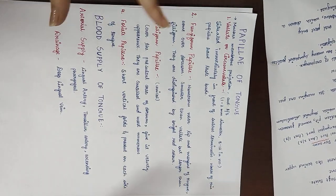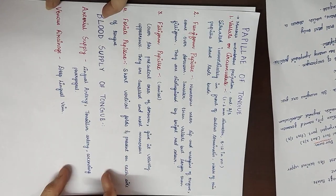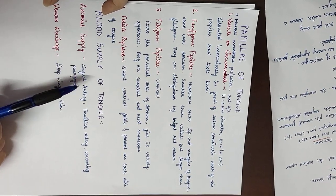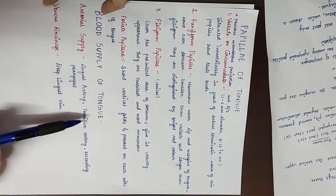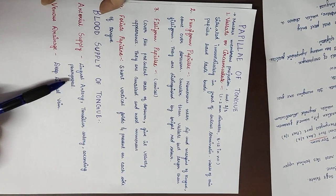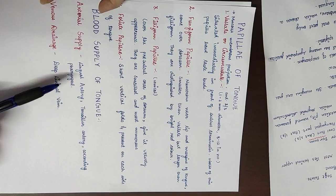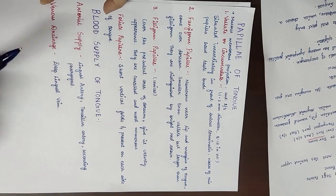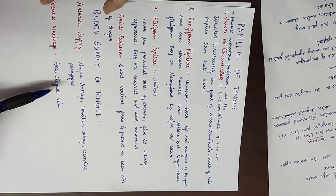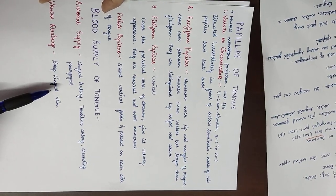Now let's look at the blood supply of the tongue. The arterial supply comes from the lingual artery, the tonsillar artery, and the ascending pharyngeal artery. The venous drainage is through the deep lingual vein.